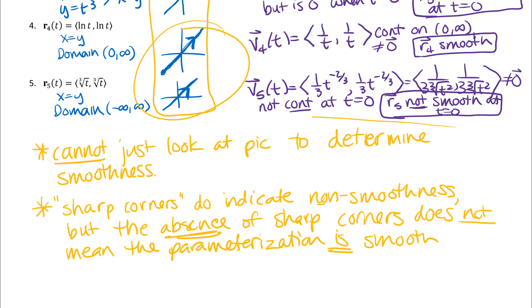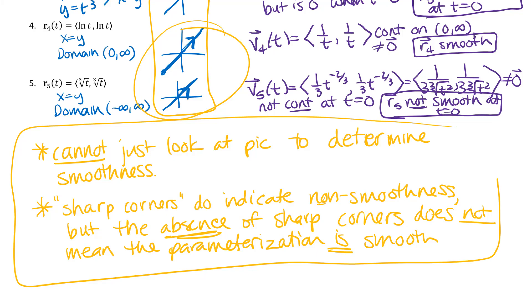Our textbook isn't very clear about this, but smoothness is a condition we're going to see over and over again. It's going to be required for a lot of the theorems and formulas we'll use later in the chapter and really for the rest of the course.